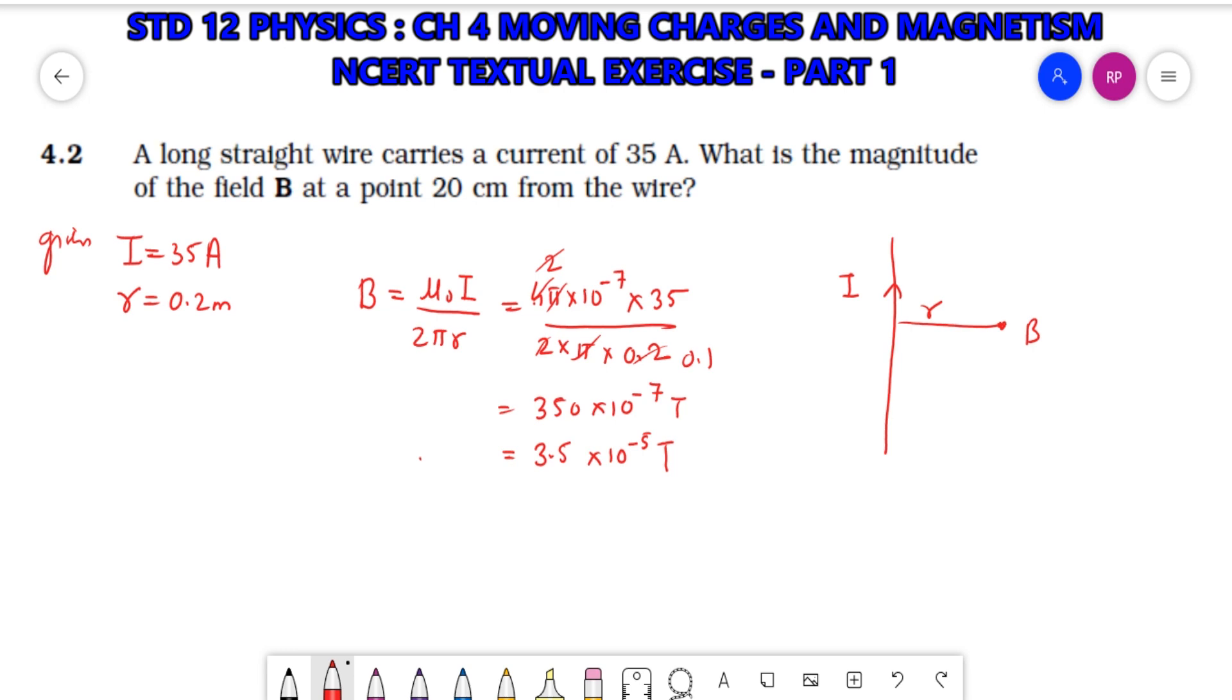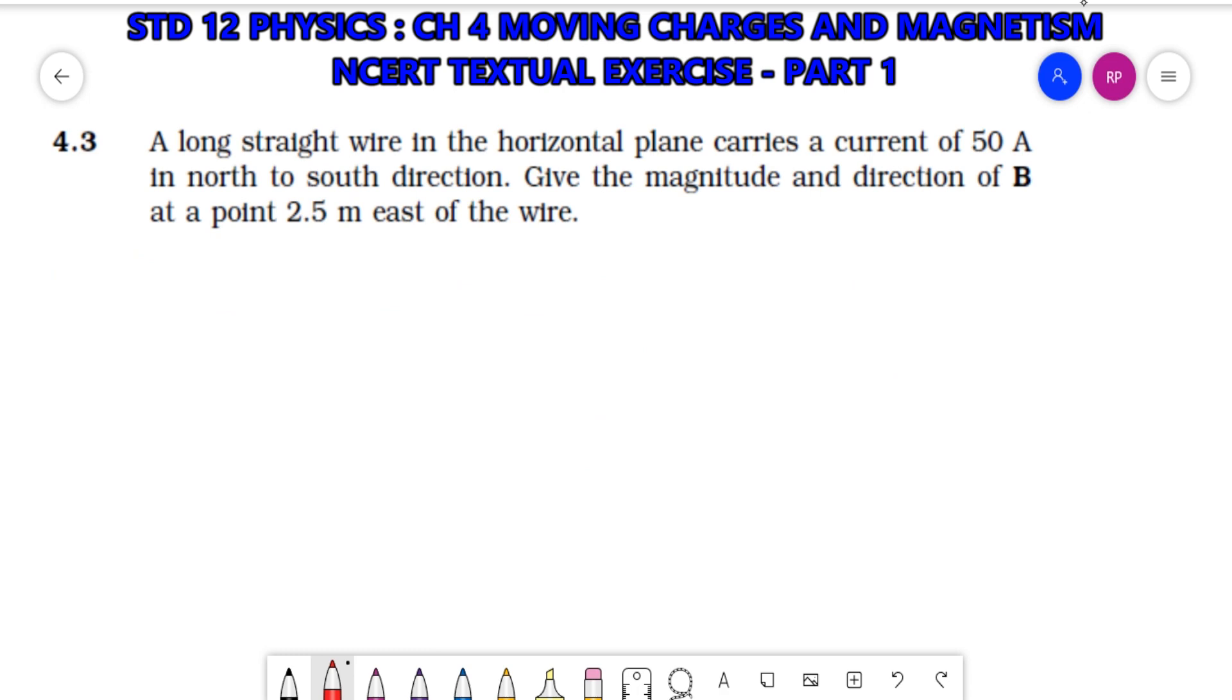Now let's see the next question, 4.3: A long straight wire in the horizontal plane carries a current of 50 amperes in the north to south direction. I am drawing it cleanly now - this is north to south, this is east to west. The wire goes north to south with current in that direction. Give the magnitude and direction of B at a point 2.5 meters east. So distance r equals 2.5 meters.